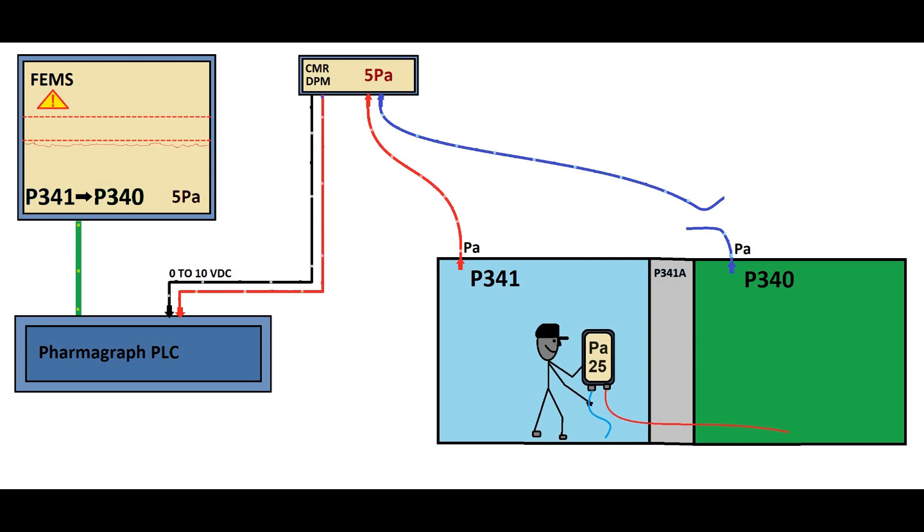In adherence to GMP principles, the HVAC SME communicates this critical finding to the FEMS Administrator, highlighting the urgency of corrective measures. The FEMS Administrator, in line with their responsibilities, swiftly arranges for repair of compromised tubes.